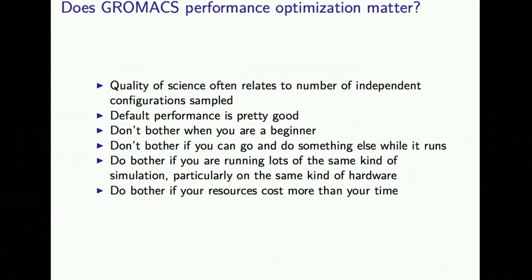By default, if you just run GROMACS's simulation engine mdrun, you will get pretty good performance. You shouldn't bother trying to improve that if you're just starting out — focus on whether you're doing a valid, correct model of the real biochemical system. Certainly if you're only doing tutorials, most of what I'm saying should go in the back of your mind for later. You should also consider not bothering if you have something else useful to do while your simulation runs, or if nobody else needs the hardware. This does unfortunately require some human time to compare the performance of different configurations.